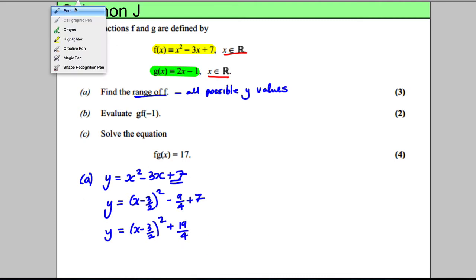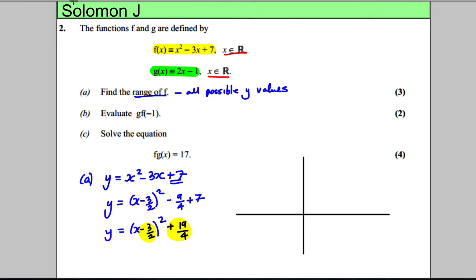Now the beauty of this, putting it in completed square form, is that these two numbers tell us something about the vertex or the minimum or maximum of the graph. It tells us that the graph, so we can actually sketch the graph, has its minimum at positive 3 over 2 and positive 19 over 4. I know it's going to cross the axis at 7, so up here somewhere, so I know the graph looks something like that.